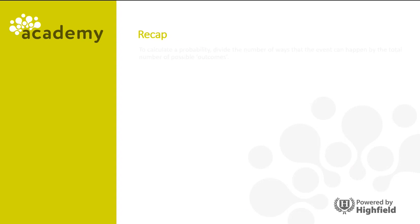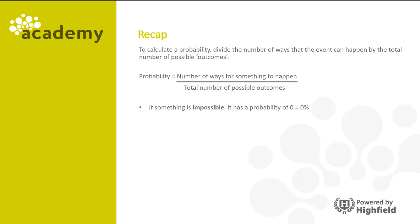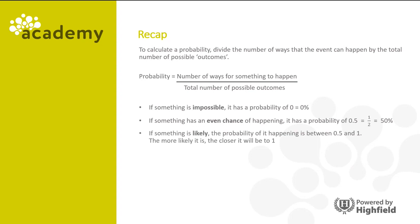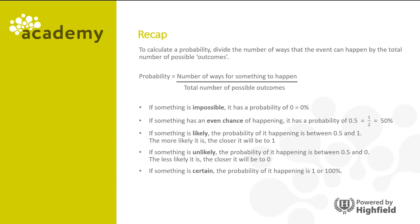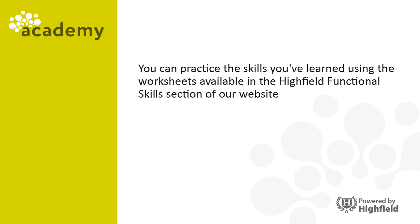Let's recap. To calculate a probability, divide the number of ways that an event can happen by the total number of possible outcomes. If something is impossible, it has a probability of 0 or 0%. If something has an even chance of happening, it has a probability of 0.5, or half, or 50%. If something is likely, the probability of it happening is between 0.5 and 1, and the more likely it is, the closer to 1 it will be. If something is unlikely, the probability of it happening is between 0.5 and 0, and the less likely it is, the closer to 0 it will be. If something is certain, the probability of it happening is 1 or 100%. Thanks for participating and I'll see you on the next session.